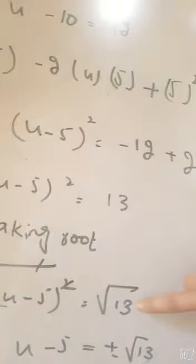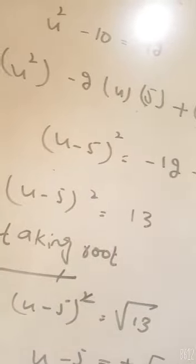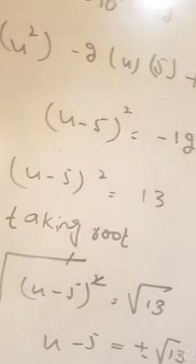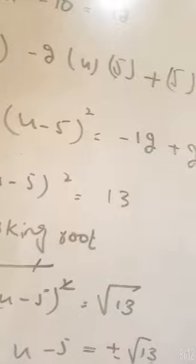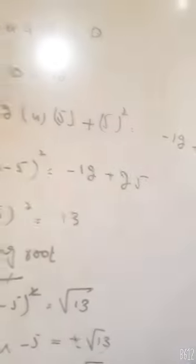Taking square root on both sides, the square and root cancel each other. Then x - 5 = ±√13, so x = 5 ± √13. This is positive and negative, the answer of question number one.